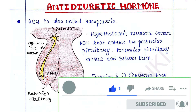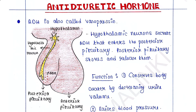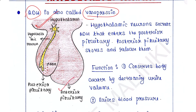Anti-diuretic hormone, or ADH, is also called vasopressin. In this picture, this is the hypothalamus, this is the anterior pituitary, this is the posterior pituitary, and this is the hypothalamic neuron.